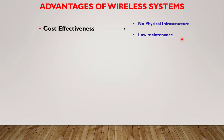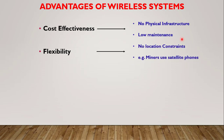Another advantage is flexibility. That means you don't have any location constraint in such types of communication. For example, miners in mines use satellite phones to communicate with their families at home. You need not be in an office or telephone booth to communicate. That is flexibility, and it is provided by these wireless systems.